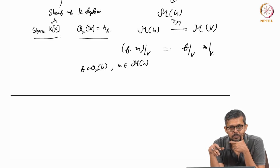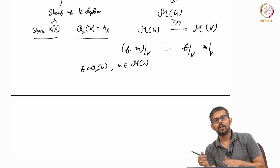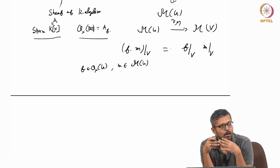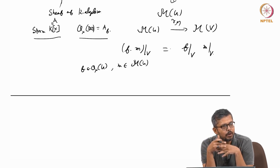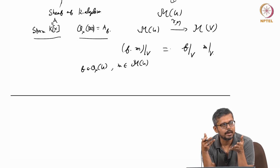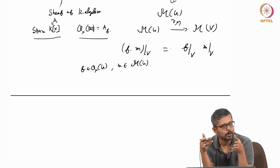Among sheaves of OX modules, if the sheaf is locally free, these are the vector bundles. If the modules M(U) are finitely generated OX modules, these are called coherent sheaves. If you do not assume finitely generated, they are called quasi-coherent sheaves of OX modules.